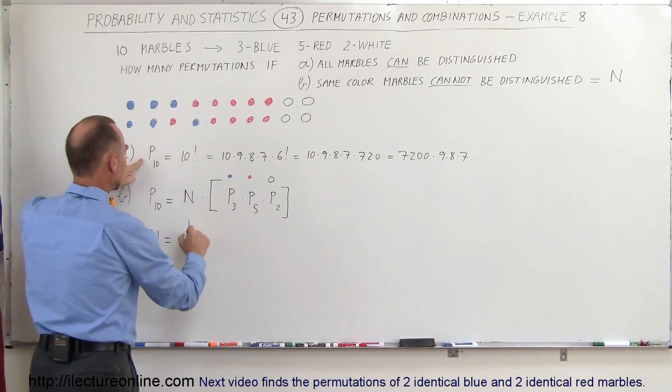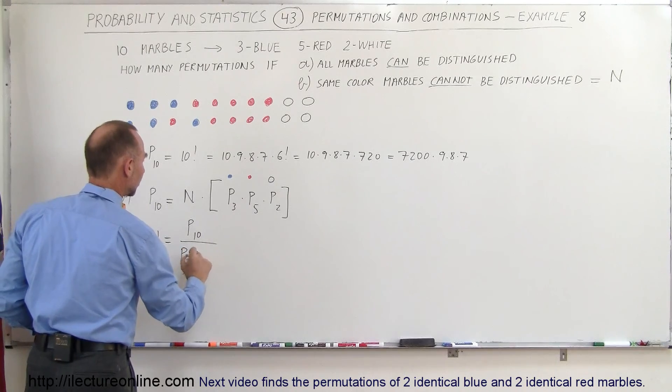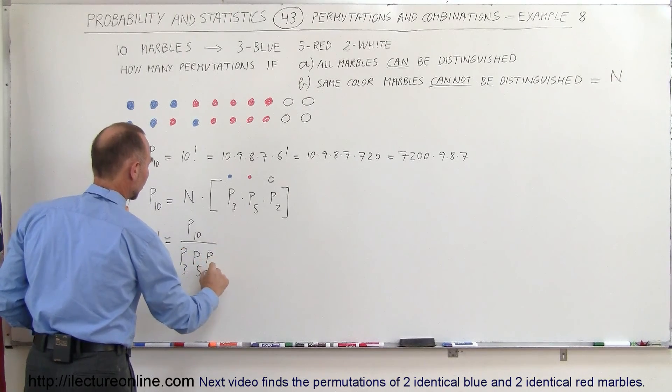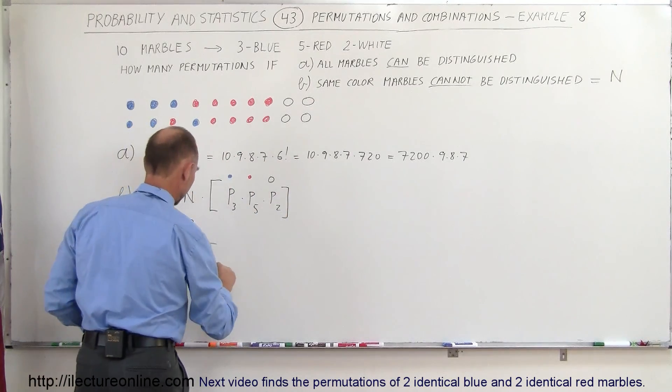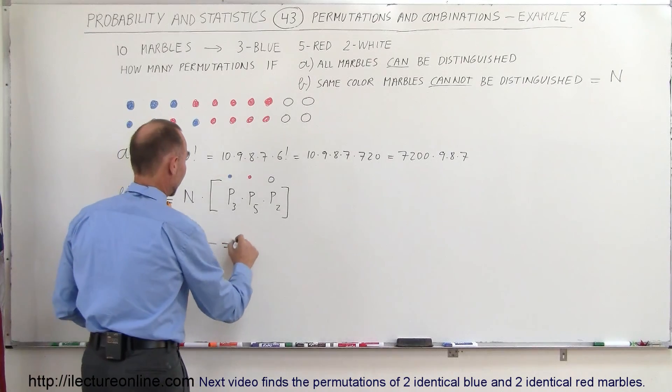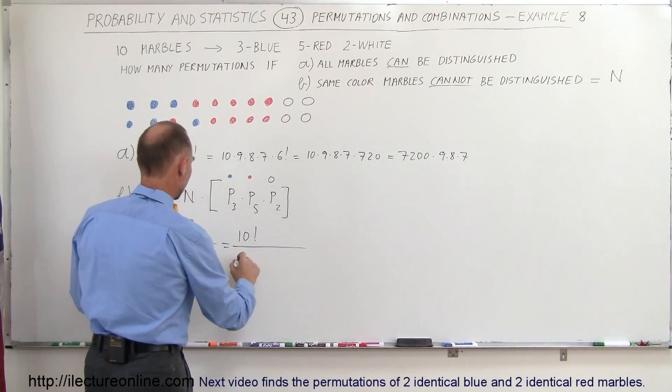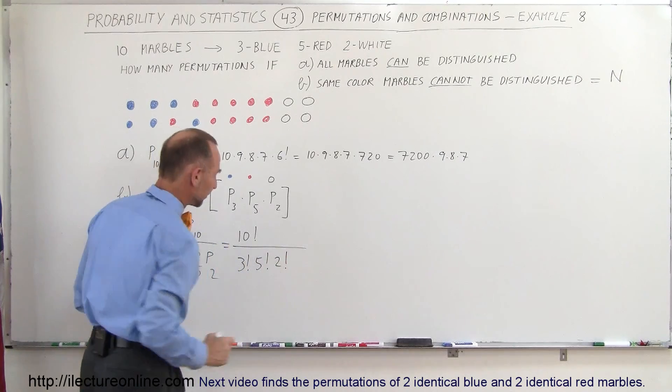So P when there's ten of them, divided by P when there's three of them, the permutations when there's five of them, and the permutations when there's two of them—not three, two, there's only two white ones. And so the answer to that would then be, this is equal to ten factorial divided by three factorial times five factorial times two factorial.